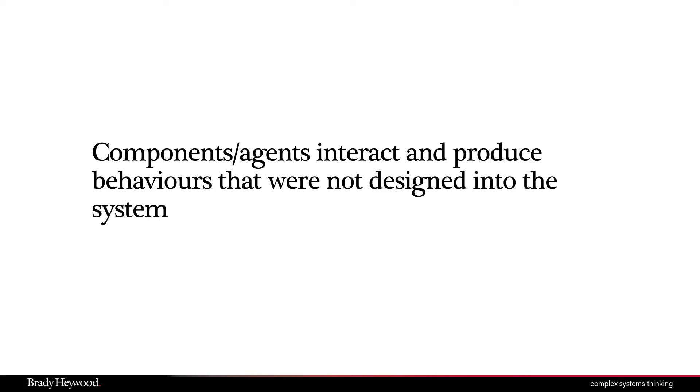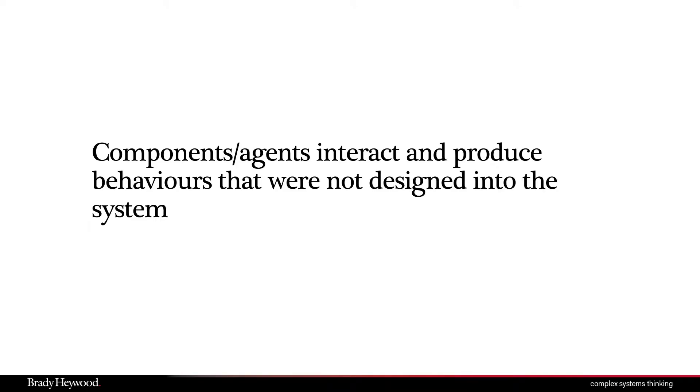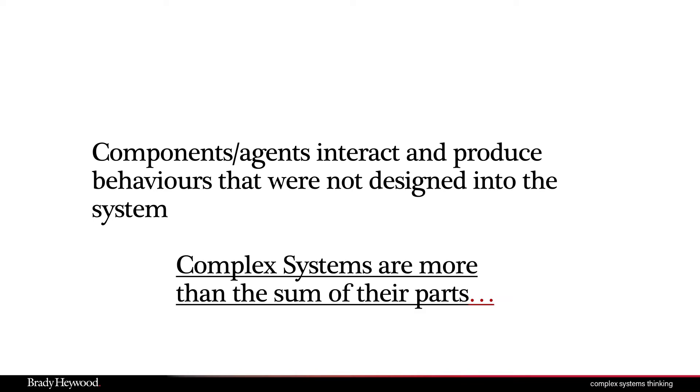If I had to pick the single key thing to learn about complex systems, it's the concept of emergence. Emergence is when the components or agents of a system interact and produce behaviors that were not designed into the system. We define the interactions between the agents, but the behavior that results can be quite different from what we actually programmed. One way of thinking about this: the system is more than the sum of its parts. This is actually one way to define complex systems — they have emergence, they are more than the sum of their parts. And remember, Newtonian systems are only the sum of their parts.